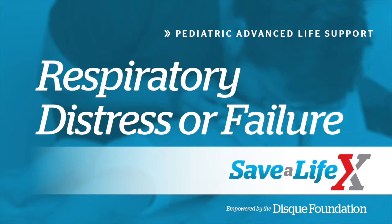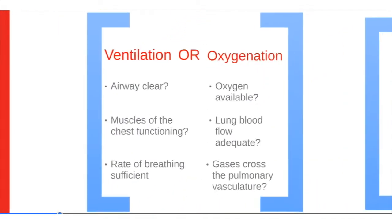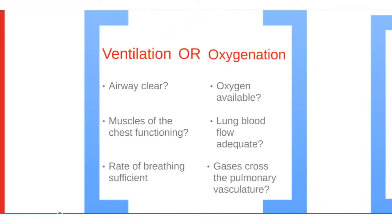Let's discuss how to recognize respiratory distress and failure in children. First, consider ventilation versus oxygenation. In ventilation, the airway is clear, the muscles of the chest are functioning, and the rate of breathing is sufficient. In oxygenation, oxygen is available, the lungs have blood flow, and gases can cross the pulmonary vasculature.